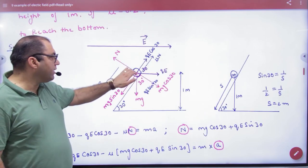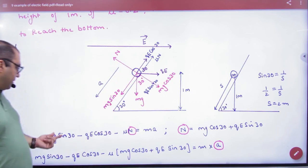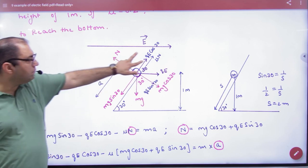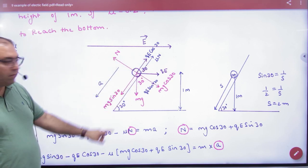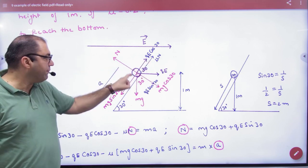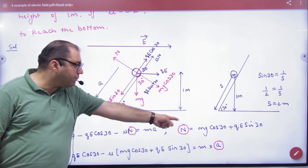Acceleration is down the incline. So, the net force is mg sin 30 minus two forces. Minus QE cos 30 minus mu times normal reaction equals m into a.